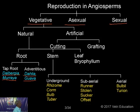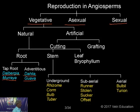Dahlia's root tuber is also very beneficial to human beings. Dahlia and Guava use adventitious roots for propagation, whereas Dalbergia and Muraya use taproot for vegetative propagation. In the stem, you have underground stem, subarial, and aerial modifications.